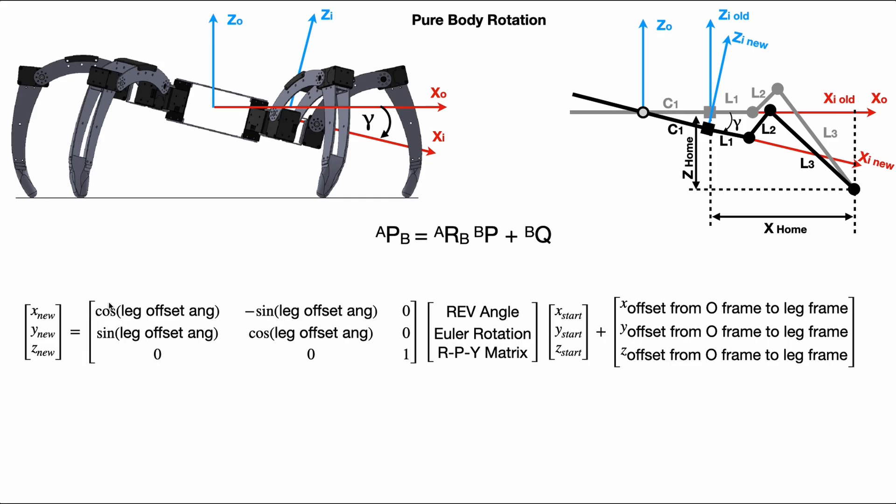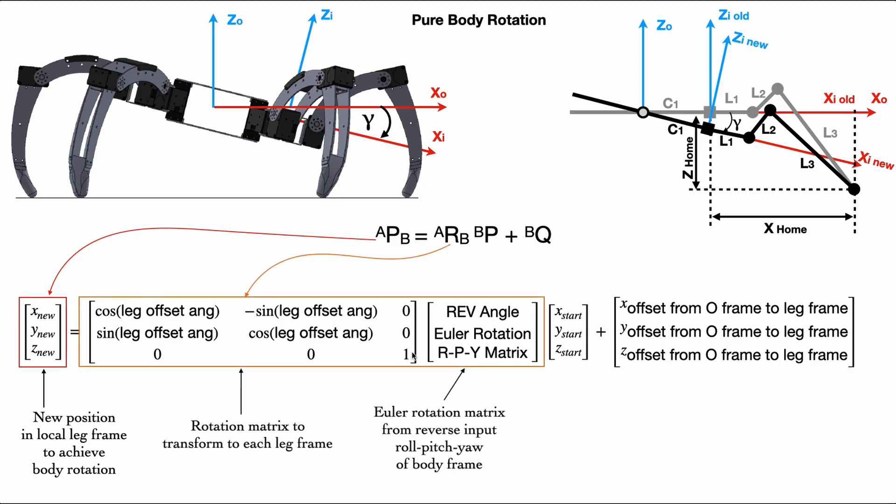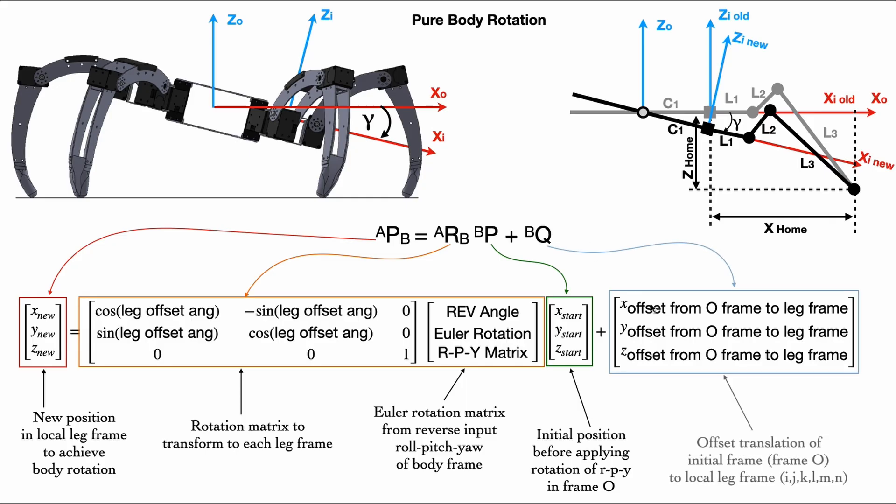So how this equation is related to our robot body rotation. And here is the full equation from our scenario when robot is rotating in body frame and what will happen in the leg frame. The first term is a new position in leg frame to achieve body rotation. This 3x3 two matrices are the rotation matrix term. The first one is the rotation to transform point at body frame to each leg frame because each leg frame are offset from body with different angle offset. And the second term is an Euler rotation matrix of roll pitch yaw input from body frame.